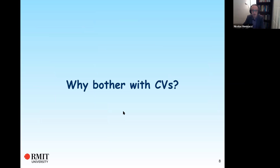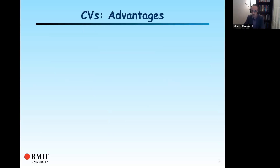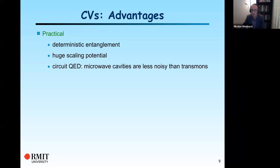Most of what I'm going to say here focuses on the optical regime, where I have the most experience, though some of it will also apply to circuit QED. At the practical level, we can get deterministic entanglement from these sources — getting photons to talk to each other deterministically is quite difficult. There's huge scaling potential for these entangled states, which I talk about in my work on continuous variable cluster states. In circuit QED, the microwave cavities are actually less noisy than the transmons themselves, so if you use the transmons as an ancilla rather than as the data carrier, you can do better in some cases.